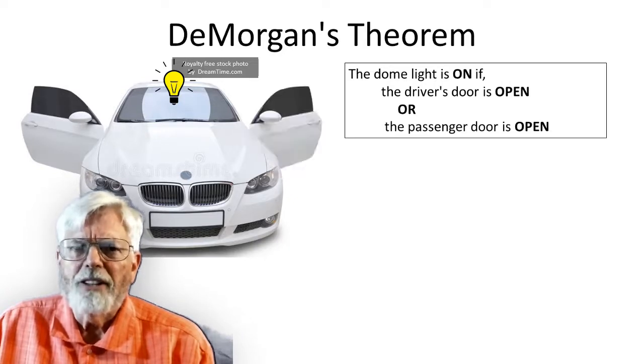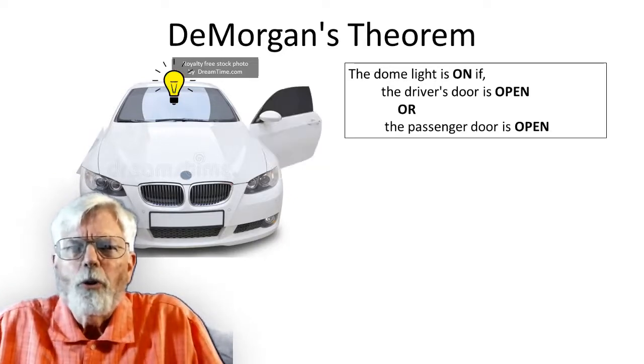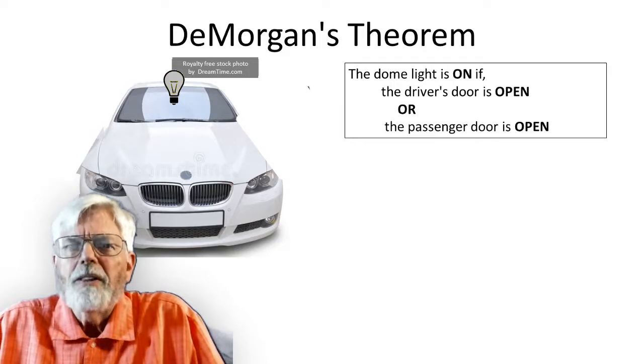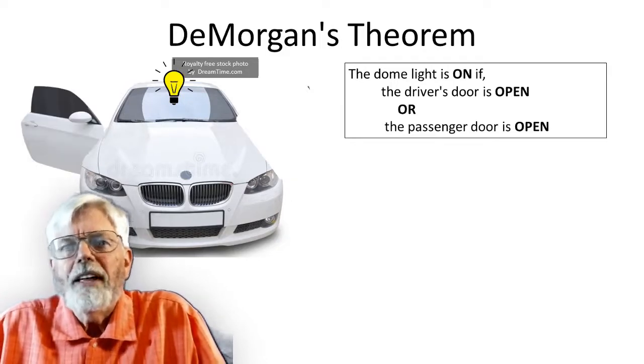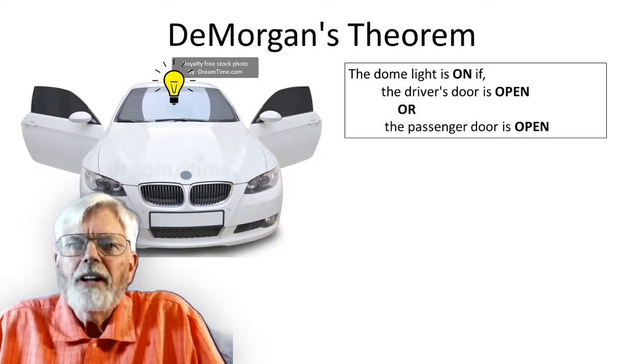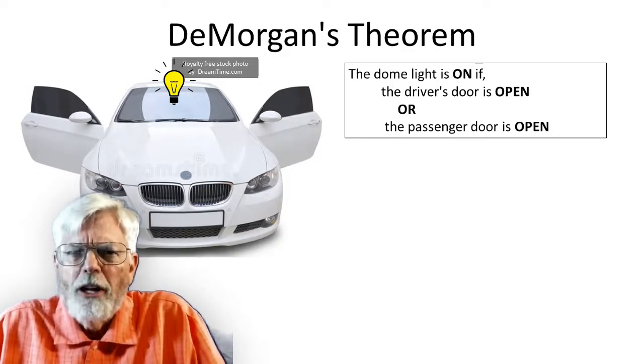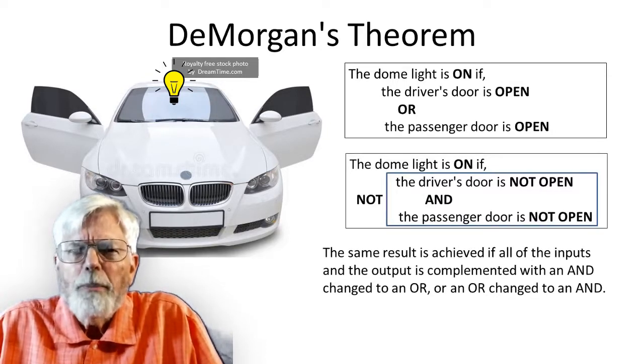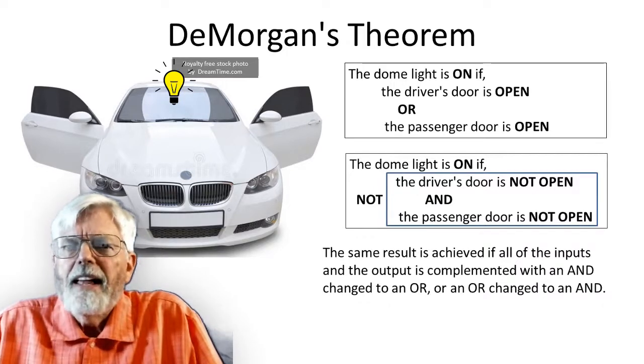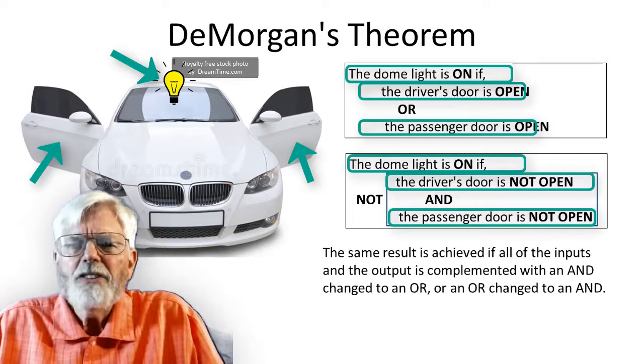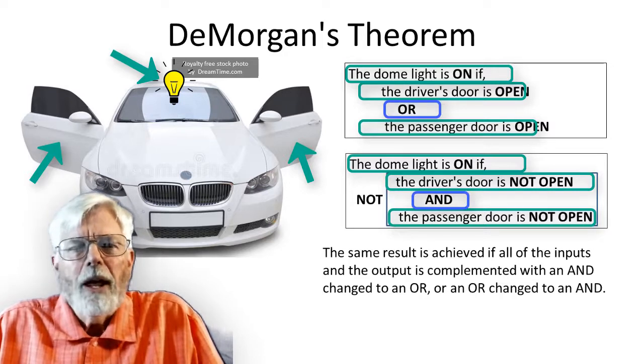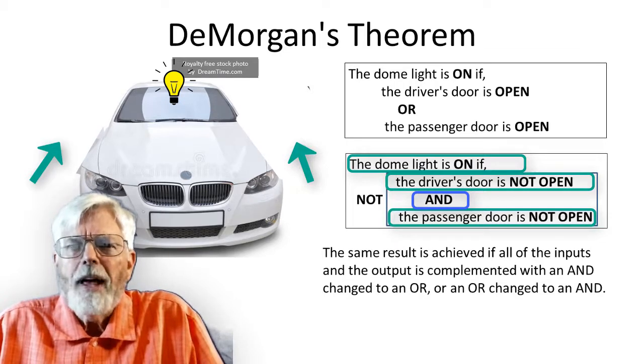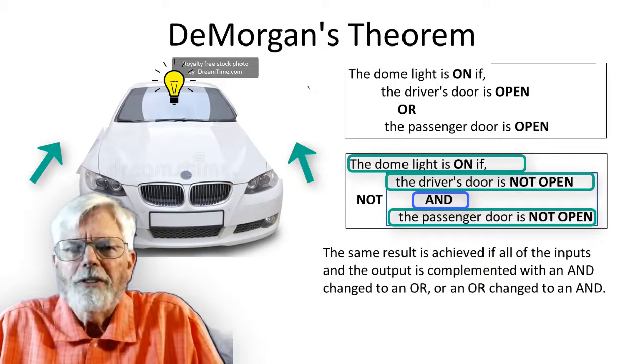It might be easier to think of this negative logic using car doors as an example. If either of the doors is open, the dome light turns on. This is true even if only one of the doors is open. The logical OR evaluates to true if either condition is true. Instead of just saying what happens to turn the light on, I'm going to use DeMorgan's theorem to get the same result by complementing changing to the opposite state, each of the input and output conditions AND changing the OR to an AND. The dome light is not on. If not both, the driver's door is not open AND the passenger door is not open. The result is exactly the same.